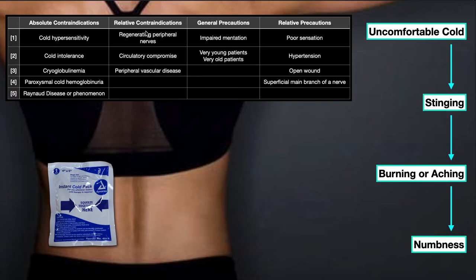Relative contraindications include regenerating peripheral nerves, circulatory compromise, and peripheral vascular disease. These depend on where on the body you're applying the cold. For example, if you have regenerating peripheral nerves in the posterior forearm, you would never apply cryotherapy on the posterior forearm, but you could still apply it on the leg, back, or neck. Basically, anywhere these conditions are present, you would not apply cryotherapy.